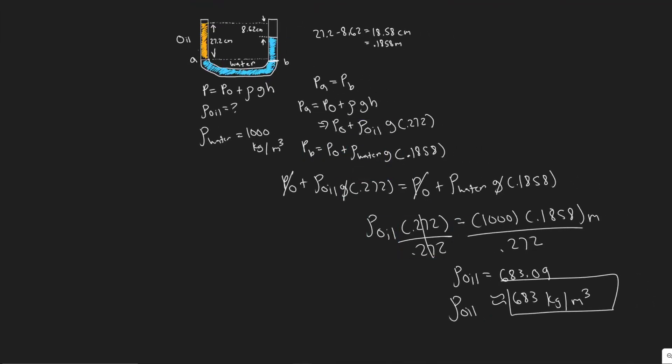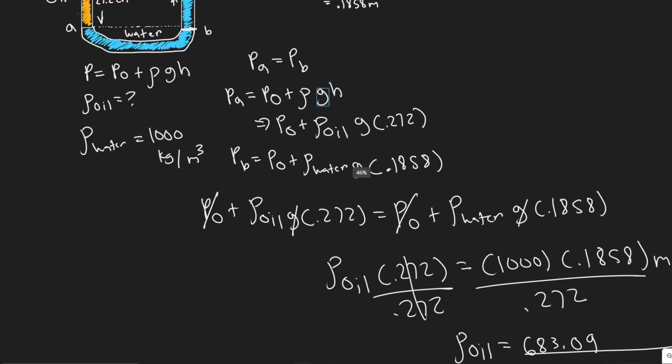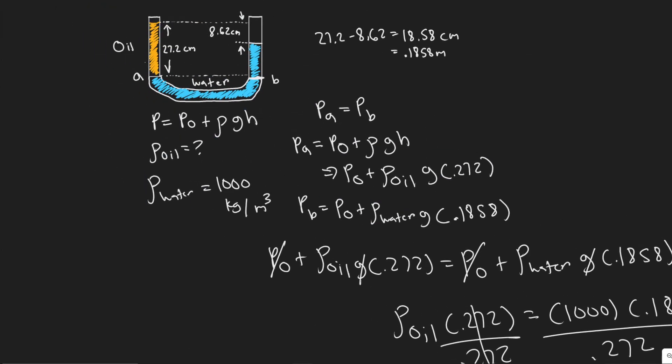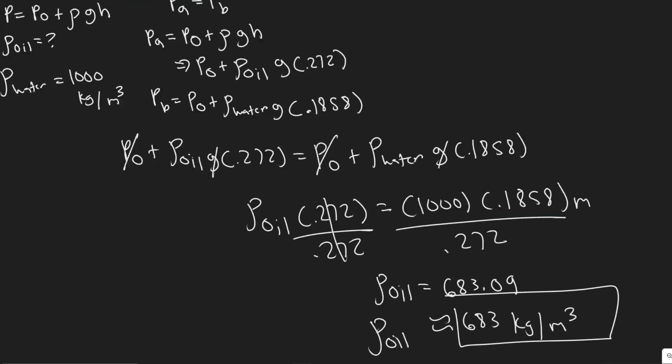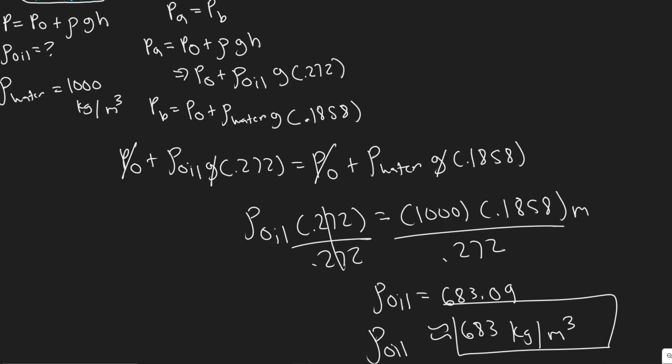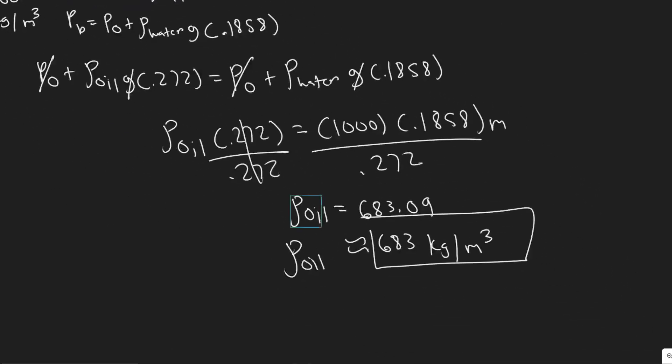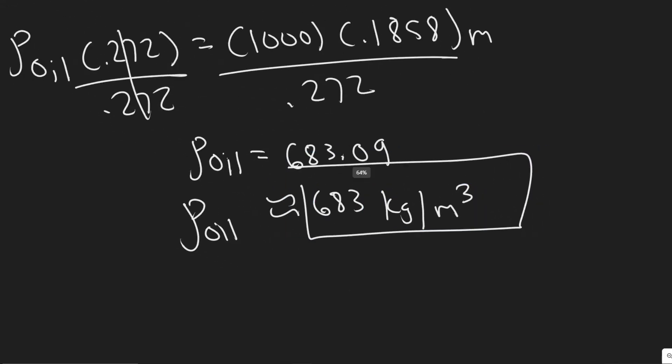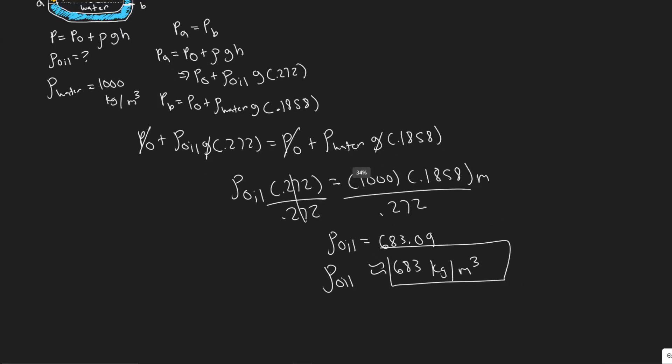And so all we did once we know they were equal is you have the formula for the pressure at point A and B, but we could use two different liquids since you have oil here and then water here. And then it's just a matter of setting them equal and then just solving for it. Since we already know what it is for water, it's just 1,000 kilograms per meter cubed. And then it's just a matter of solving. So 683 kilograms per meter cubed, that's going to go ahead and be your answer. And hopefully, you found this video useful.